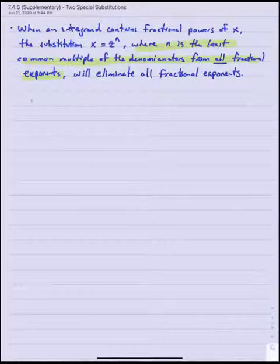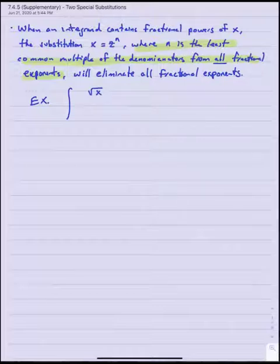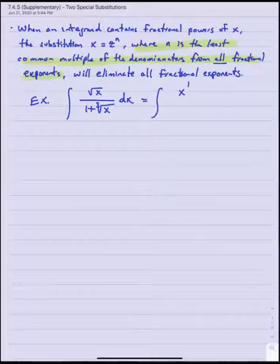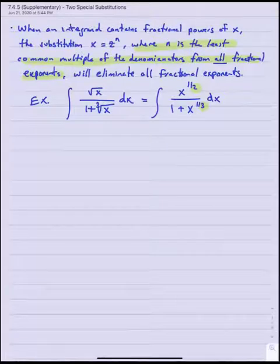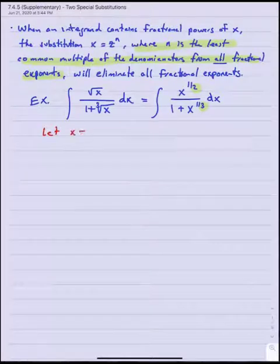For example, if I had something like the integral of square root of x over 1 plus the cube root of x, then that's really just the integral of x to the 1/2 over 1 plus x to the 1/3. Since I see two fractional exponents with denominators of two and three, I know the least common multiple would be six, which means the substitution x equals z to the sixth.